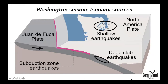Now I'm going to talk about the seismic sources for tsunamis in Washington. In this picture we are looking at a cross-section through Washington to show all three sources of potential tsunami sources. We've got subduction zone earthquakes, shallow earthquakes on faults in the North America plate, and also earthquakes that form deep underground in the subducting Juan de Fuca plate. I'll talk about each one of these in some detail now.